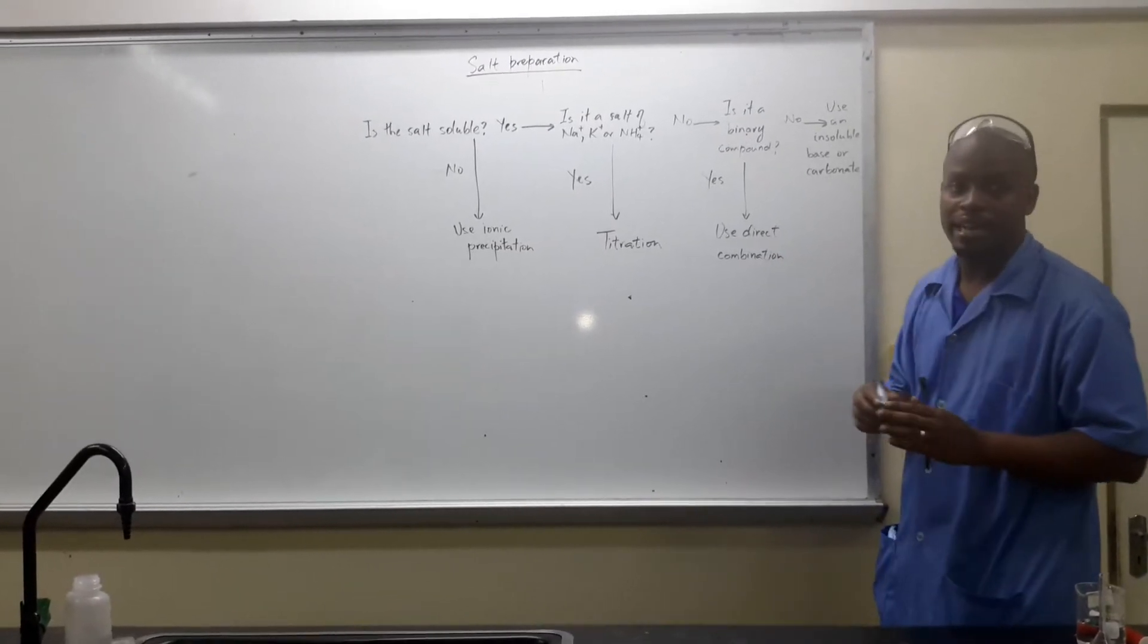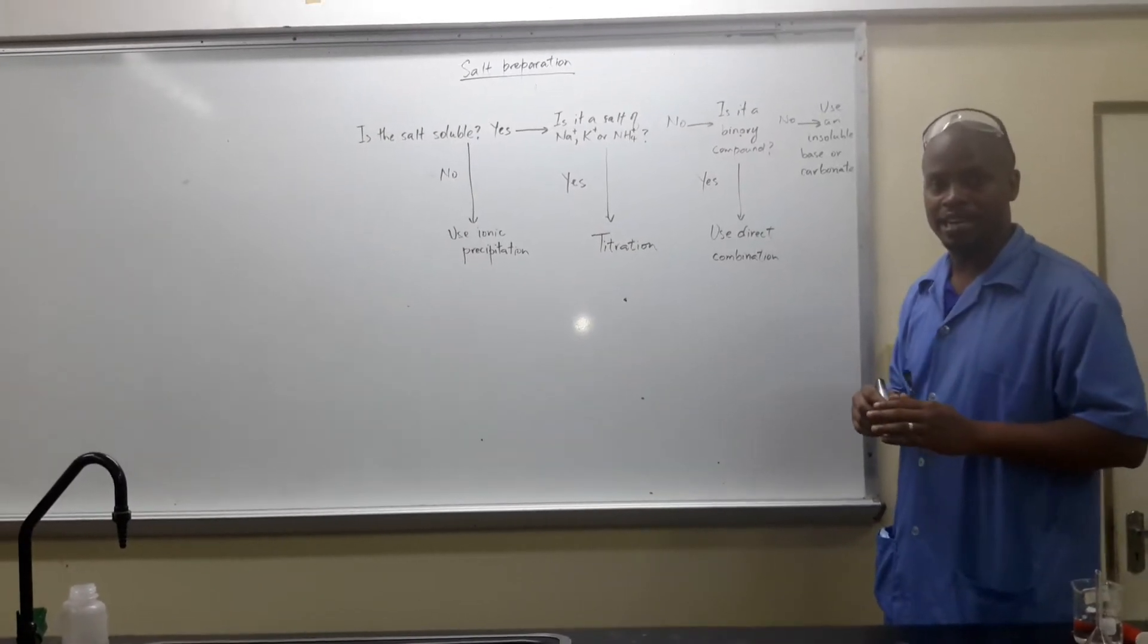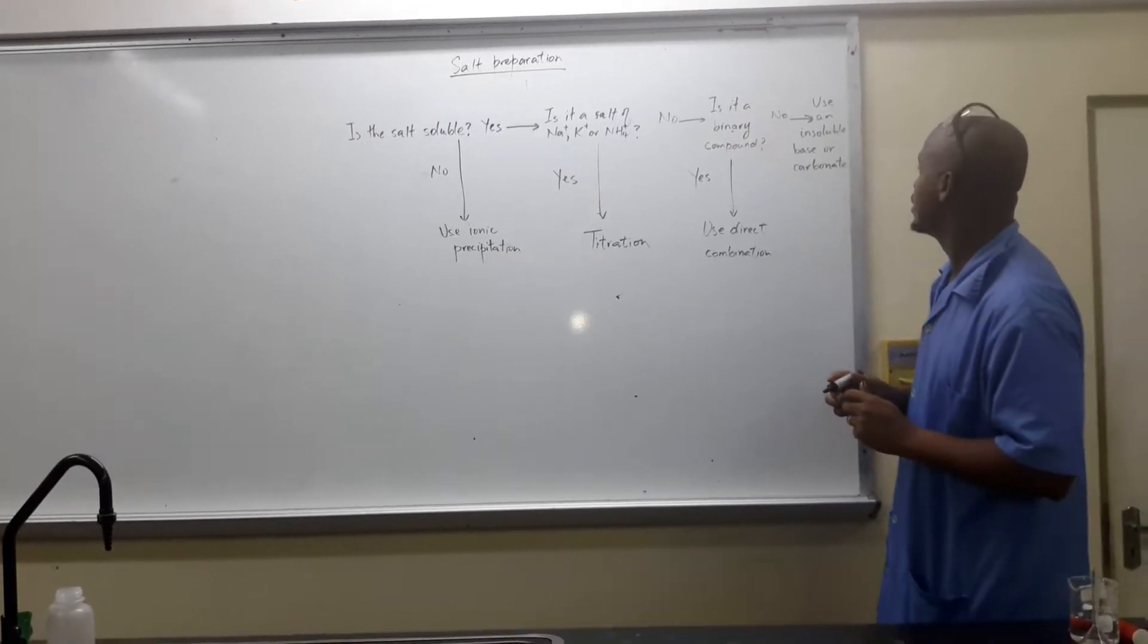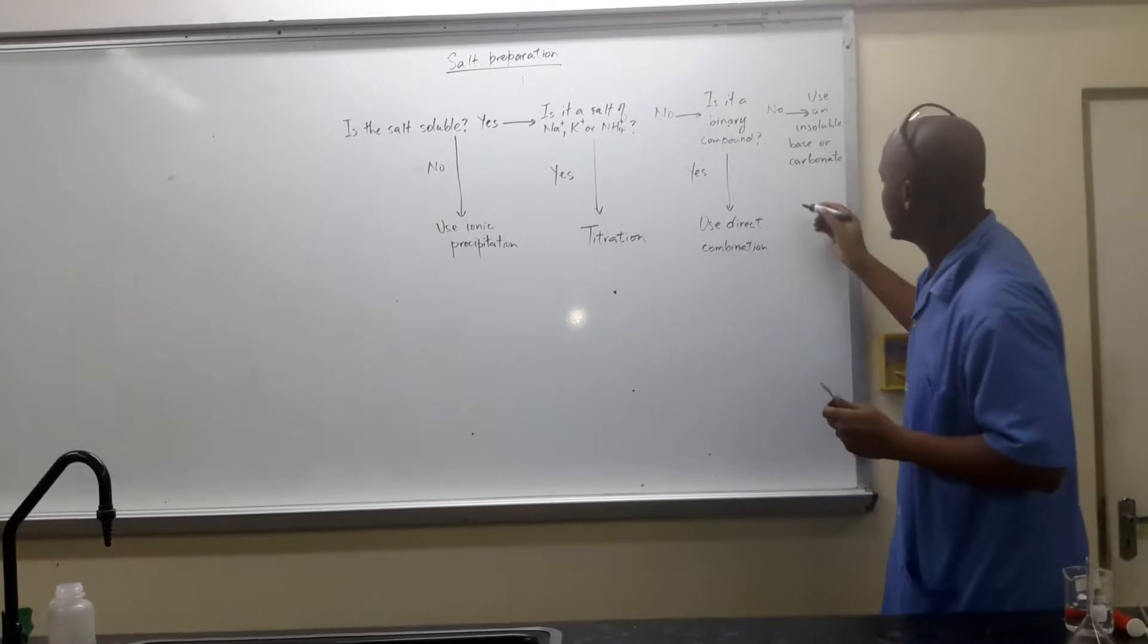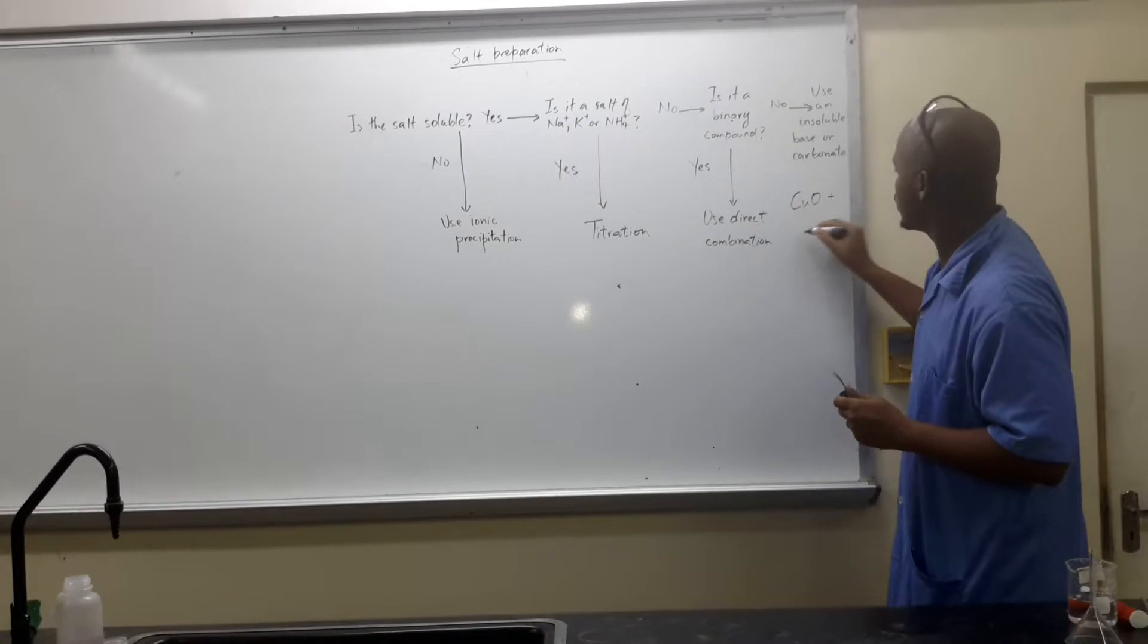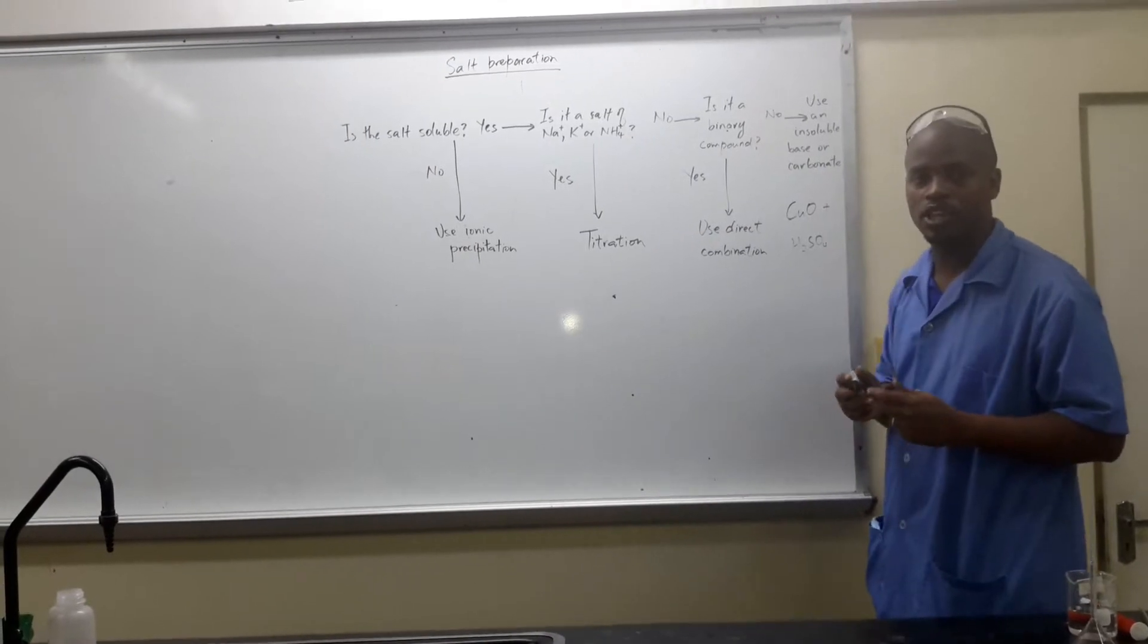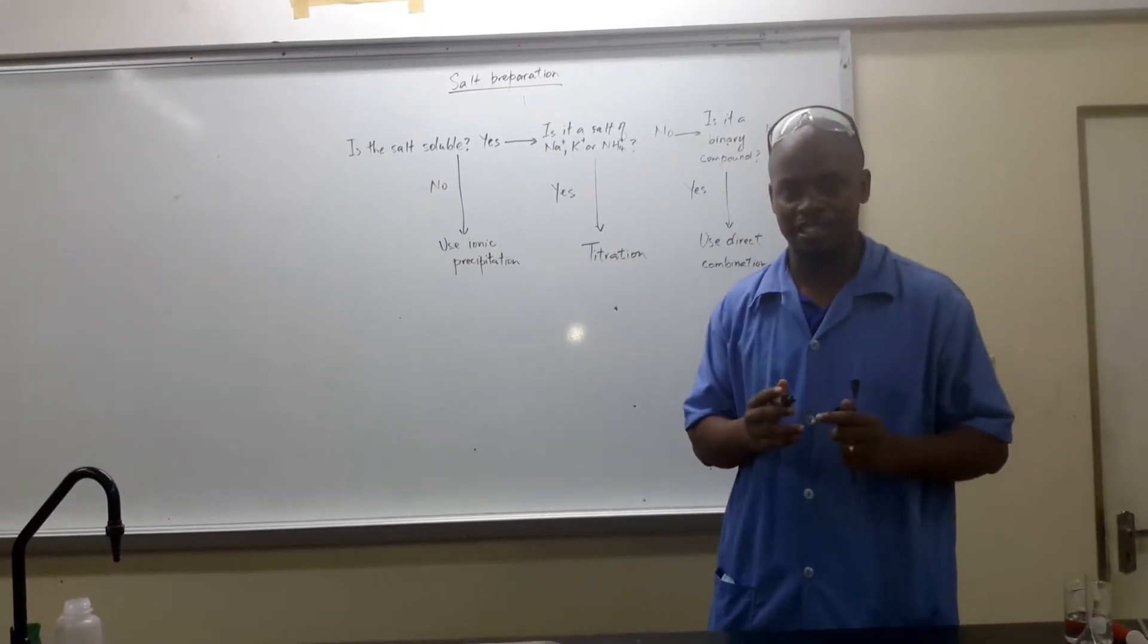For example, something like copper sulfate that contains more than two different elements. If that's the case, we're going to be using an insoluble base or carbonate. In this case, it's an insoluble base copper oxide and we'll be reacting that with sulfuric acid. This will give us our copper sulfate or hydrated copper sulfate crystals.